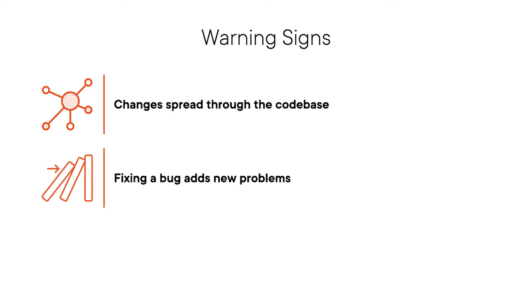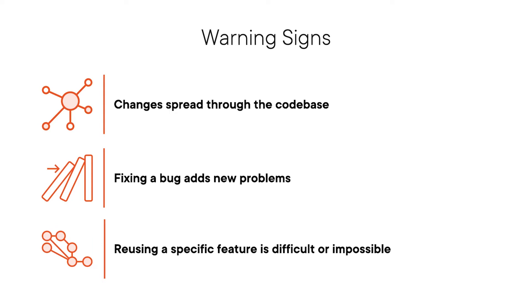The third sign is related to reusability. Suppose we want to reuse the date formatter logic we implemented earlier, so we bring over the code to our new project. However, the code doesn't compile due to missing dependencies. Extracting the date formatting functionality is impossible without bringing over unrelated classes and features we do not need. It's like having to buy a new pair of shoes even though we only needed the shoelaces.